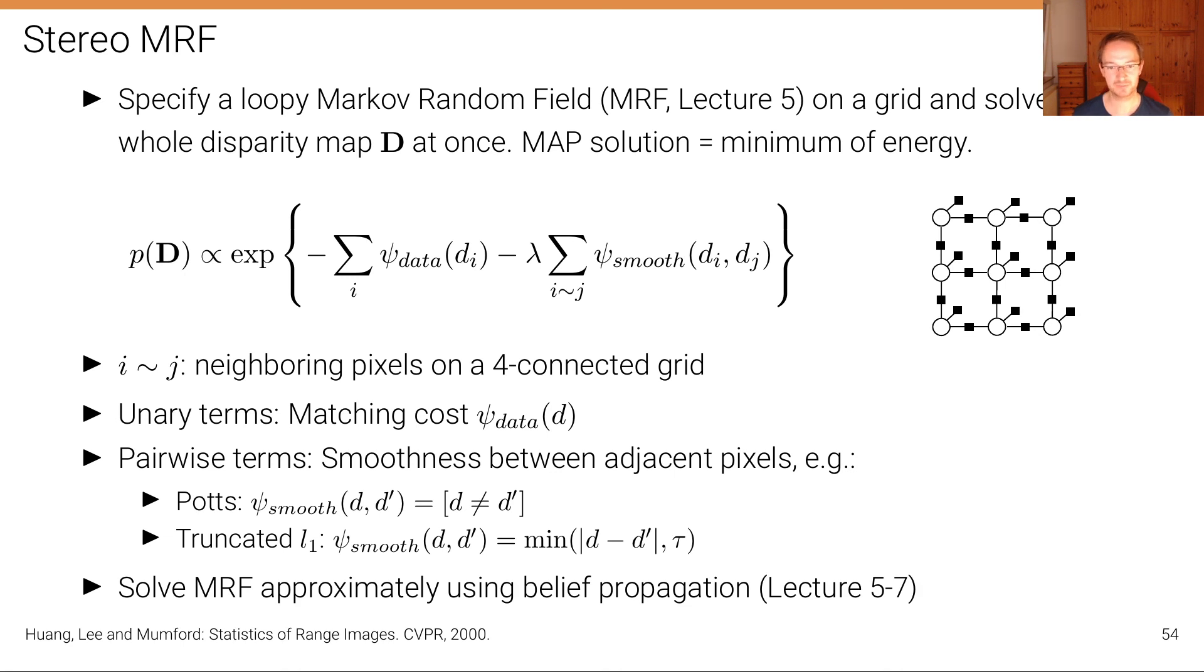And then we can solve this MRF approximately using belief propagation. Now we have specified all the potentials. We have computed these matching costs. These are just the matching costs as we did them for block matching. And then we have introduced these additional energy terms. So we have a big term now, many sums. And now we can solve for the optimal d values. If we would remove this part, then we would just obtain the winner-takes-all solution because there is no constraints between or no relationships modeled between adjacent sites. But if we introduce these smoothness constraints telling the model that if two sites are nearby, then we expect the disparity in most cases actually quite similar, so we want it to be smooth, the output. And if we minimize that energy, then we obtain a different disparity map that's hopefully better than the one we would obtain by just looking at the local information.